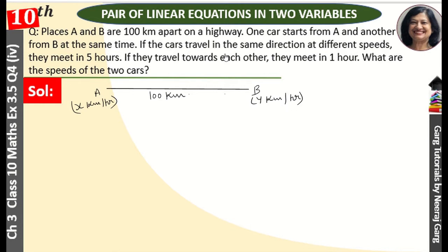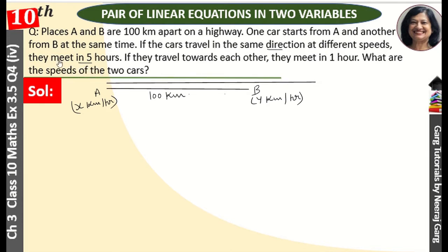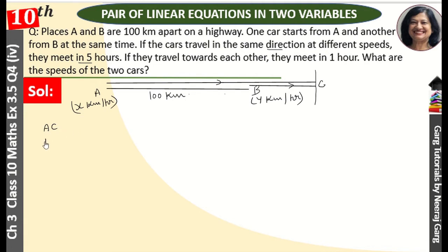If the cars travel in the same direction at different speeds, they meet in five hours. Both cars are moving in the same direction. After 5 hours, we mark a meeting point. The car starting from A covers distance AC, and the car starting from B covers distance BC in the same direction.